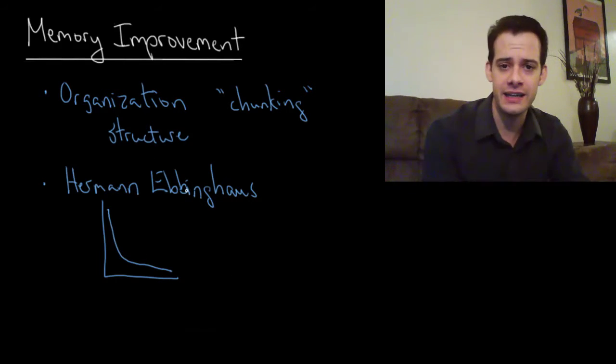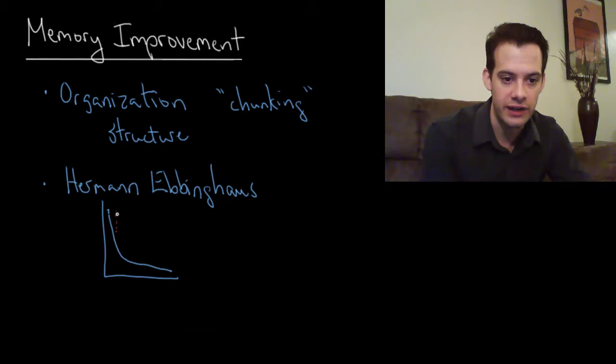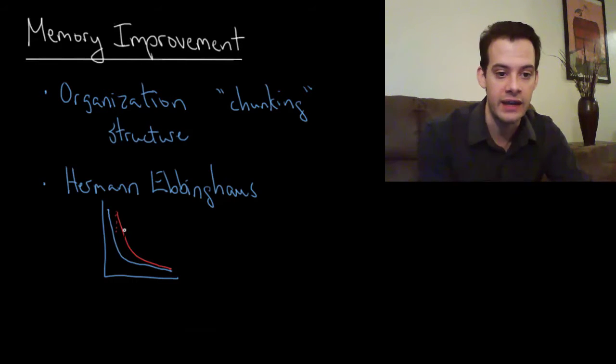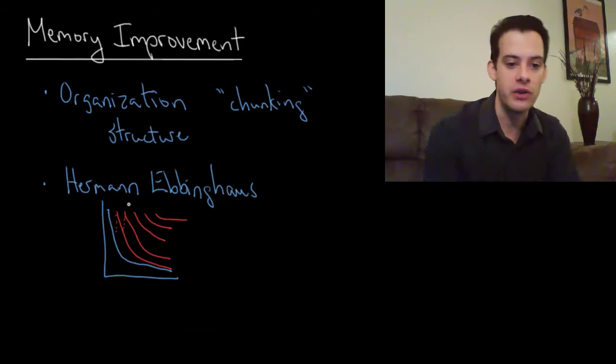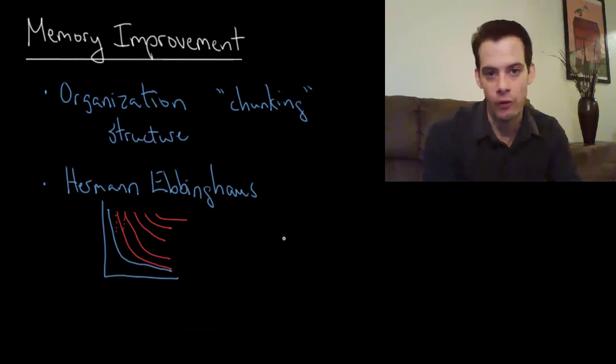The idea of the forgetting curve is that each time you review the information you're sort of raising that curve back up. You're starting here again and it gradually falls over time and levels off, but you'll know a little bit more than you did before. And if you study again, eventually if you study it enough times you end up with this sort of high flat version of the curve where you recall a lot of the information for a long time.